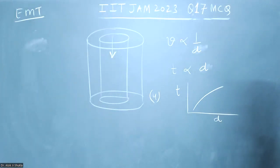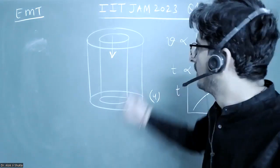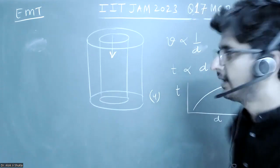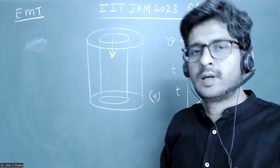This is a question from EMT in which there is a hollow copper pipe with thickness, and a magnet is falling into it. They have asked for the graph between time and the thickness.